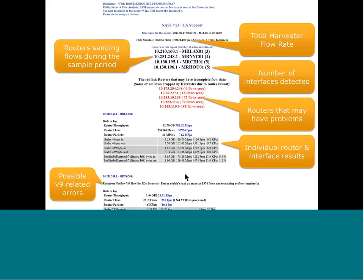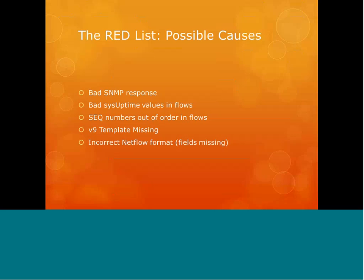In later versions of the NAST tool, you can also see where it details any kind of problems with V9 templates. For example, if there's a certain router that's sending flows but not including that template, it'll list it here. There are a couple of reasons why a device might show up in the red list. First, the harvesters do SNMP to the devices, and if that SNMP has some kind of problem communicating, that may cause the router to show up in the red list.